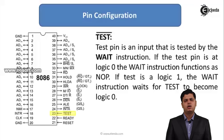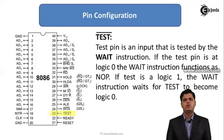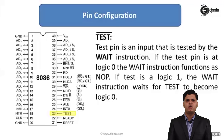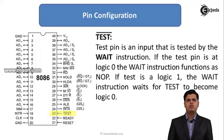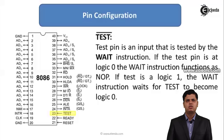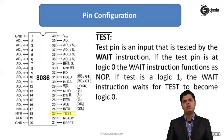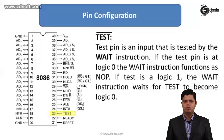The next pin is TEST bar, which is an active low input signal. The test pin is tested by the WAIT instruction. If the test pin is at logic 0, the WAIT instruction functions as a NOP. If the test is logic 1, the WAIT instruction waits for the test pin to become 0. This is used to determine how much timing is being taken by different memories, adding wait states to the machine cycle.